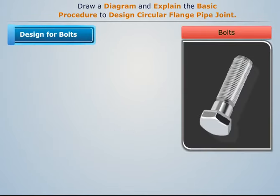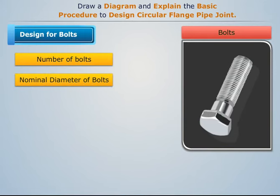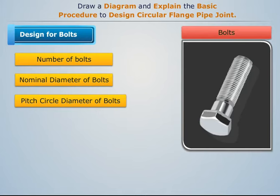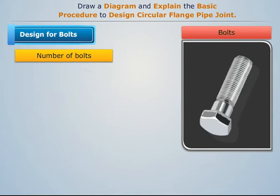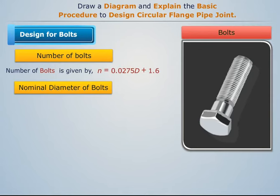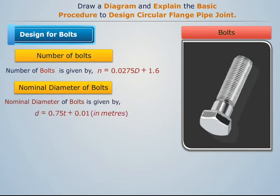Now let's design the bolts. For this we need to determine: the number of bolts, nominal diameter of bolts, pitch circle diameter of bolts, circumferential pitch of bolts, and core diameter of bolts. The number of bolts and the nominal diameter of bolts are each given by their respective formulas.